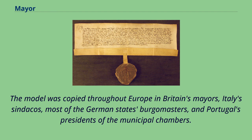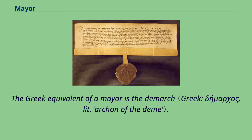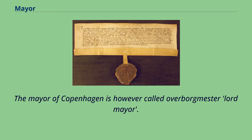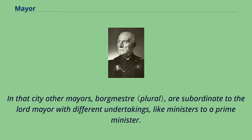In medieval Italy, the city-states which did not consider themselves independent principalities or dukedoms, particularly those of the imperial Ghibellin faction, were led by potestas. In Denmark all municipalities are led by a political official called borgmester, meaning mayor. The mayor of Copenhagen is however called overborgmester, meaning lord mayor. In that city other mayors are subordinate to the lord mayor with different undertakings, like ministers to a prime minister.